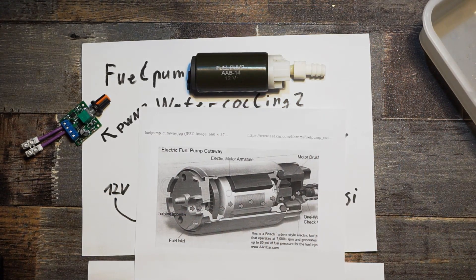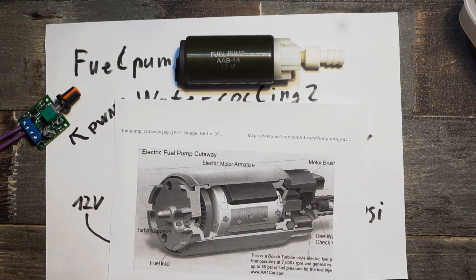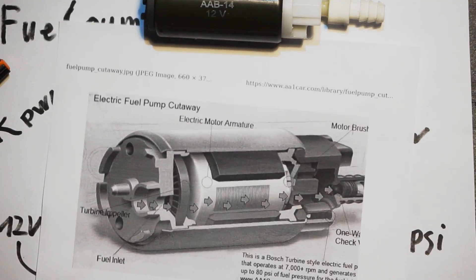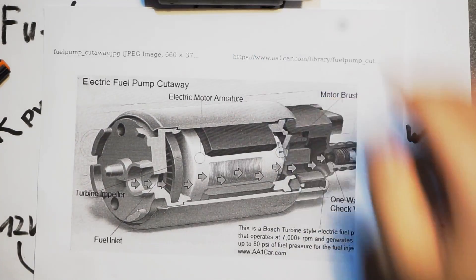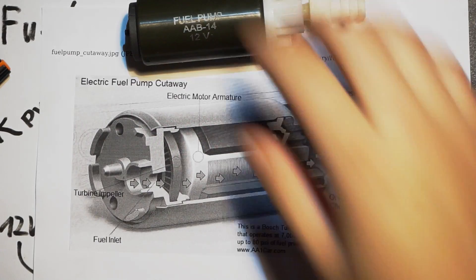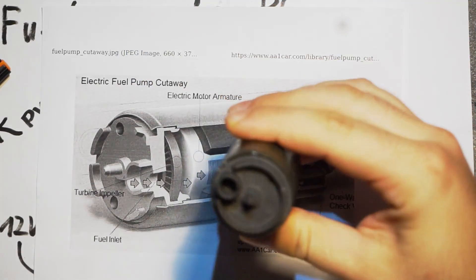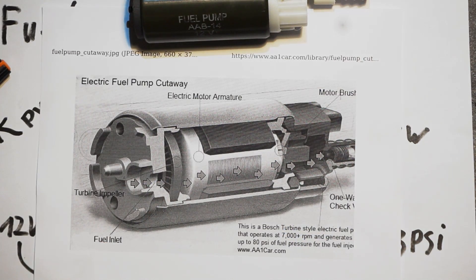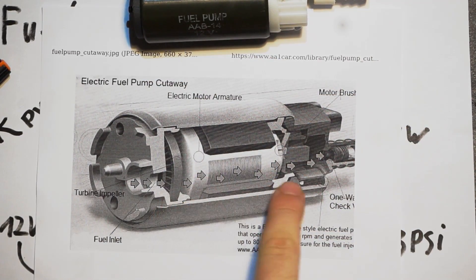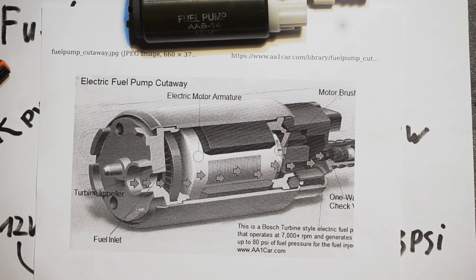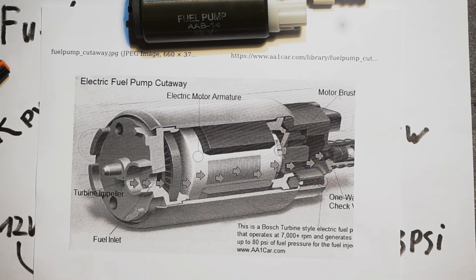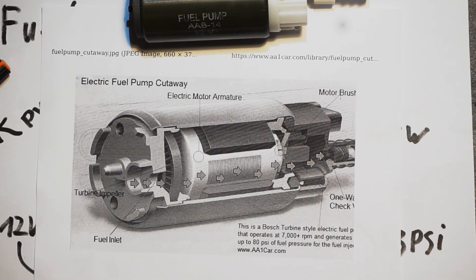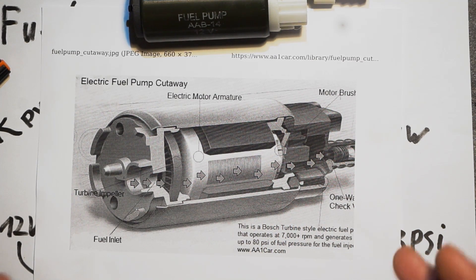At first we have to look how such a pump works in theory. Here we have a cutaway from a model like this pump. And we have here the entry. Behind there is a wheel that pushes the liquid up through the motor and out the top.